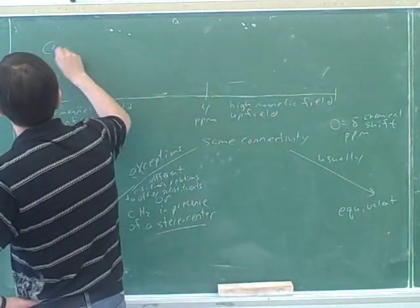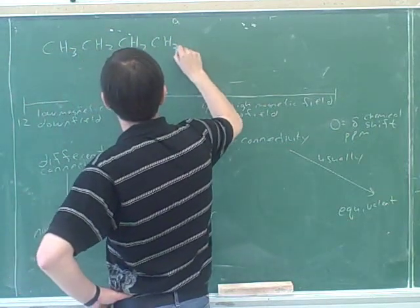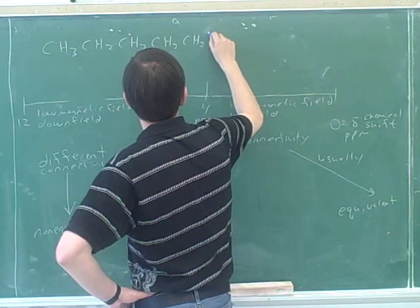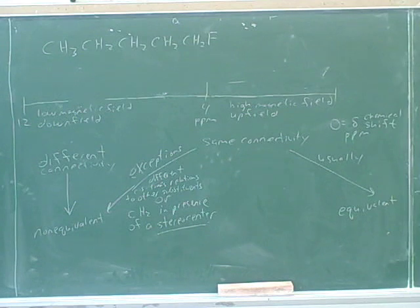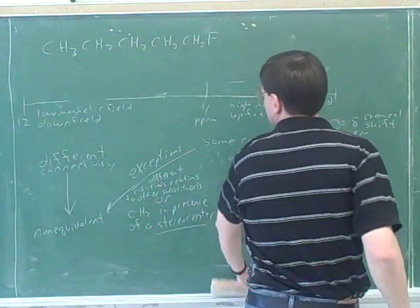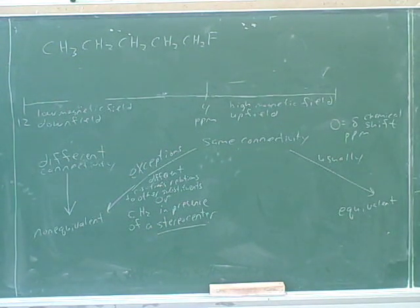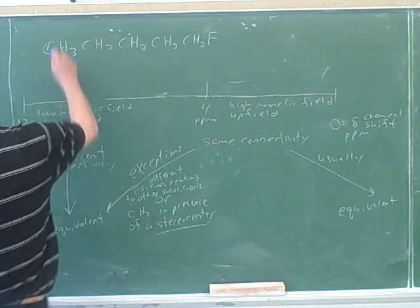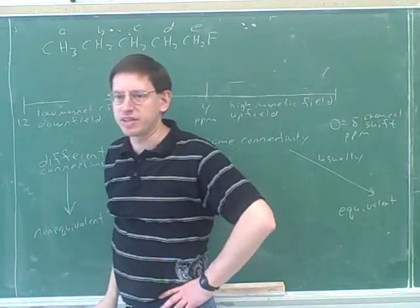So to give you an example of what I was talking about, how many peaks would we predict here? I think five peaks. Good. Theoretically, we predict five peaks.